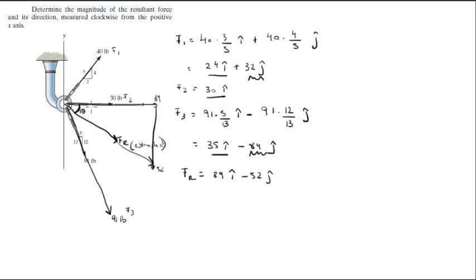Now, we need to find this angle theta and this magnitude. I'd like to start with the magnitude. You can calculate the magnitude by doing the square root of these two numbers added together. So, 89 squared plus 52 squared, all square root, it will give you the magnitude.